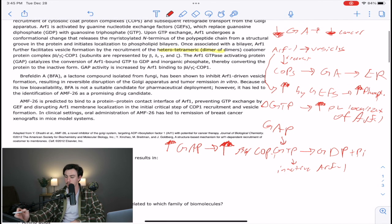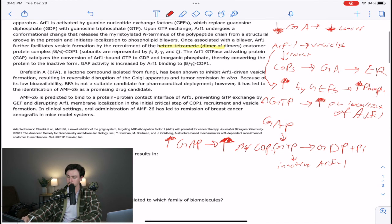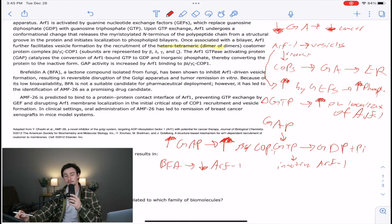And then it goes on to say, Brefeldin-A, or BFA, is a lactone component isolated from fungi, has been shown to inhibit ARF1-driven vesicle formation, resulting in reversible disruption of the Golgi apparatus. So we could say that BFA kind of decreases ARF1 activity. So we can say BFA leads to decrease ARF1. Notice what I'm doing here is I'm just trying to get a list of simple relationships.